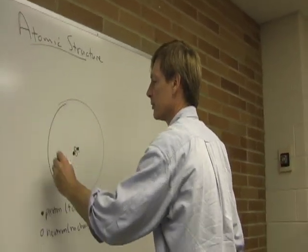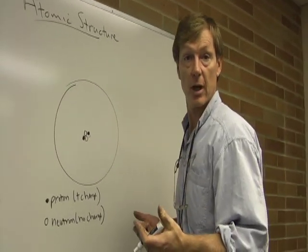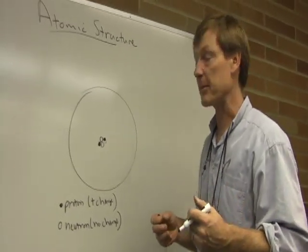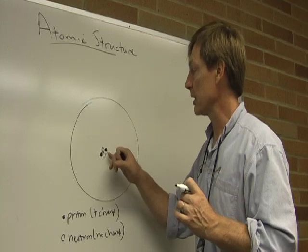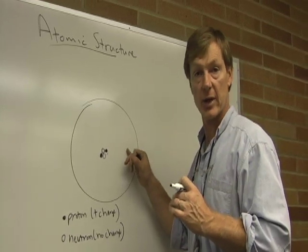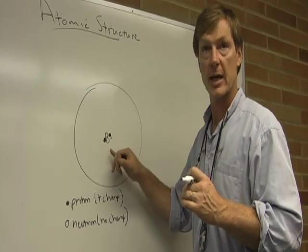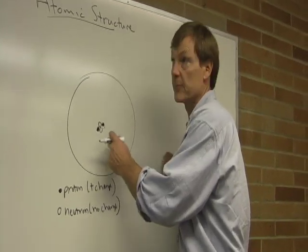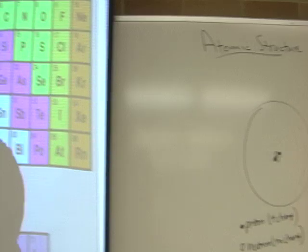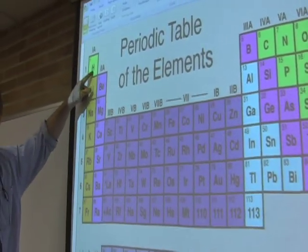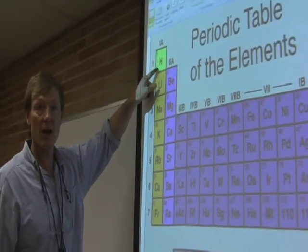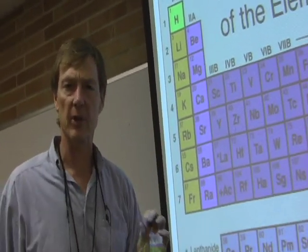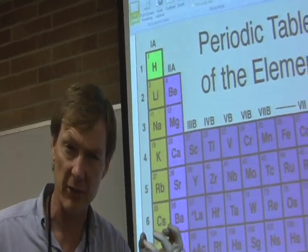The electrons orbit about or are in resonance about the nucleus. And if you have a neutral atom, that means you've got the same number of electrons as you do protons. The name of the element is determined by the number of protons. If you've got just one proton, that's hydrogen. It doesn't matter how many neutrons are in there — the number of neutrons determines the isotope of the substance. It doesn't change the way it reacts so much, other than it makes it heavier.